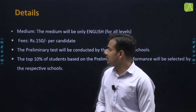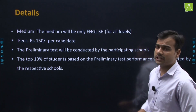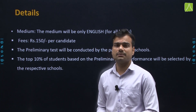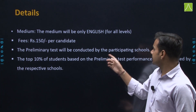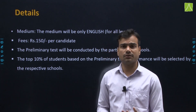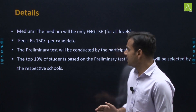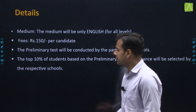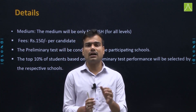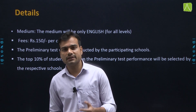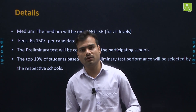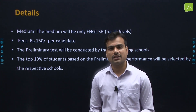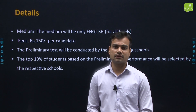The exam medium will be English only. The registration fee is 150 rupees. The Preliminary Test will be conducted at the participant's own school — it will be an offline exam. Based on the Preliminary Test performance, the top 10% of students selected by the respective school will qualify for Stage 2. You can collect more information from your Resonance Center.